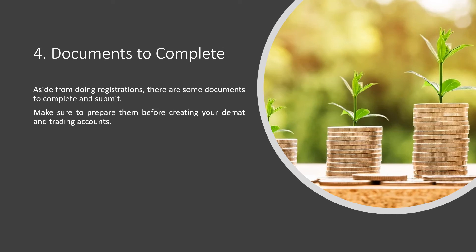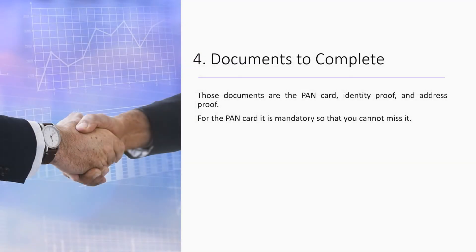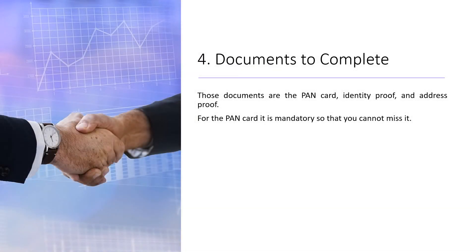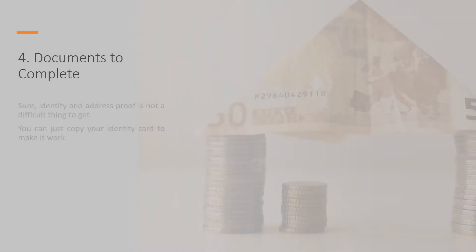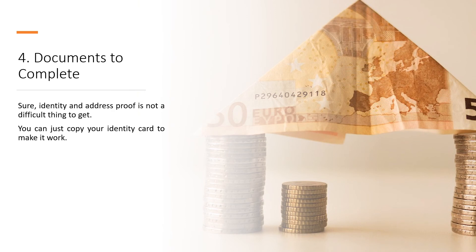Documents to Complete: Aside from doing registrations, there are some documents to complete and submit. Make sure to prepare them before creating your DMAT and trading accounts. Those documents are the PAN card, identity proof, and address proof. For the PAN card, it is mandatory so you cannot miss it. Meanwhile, for the other two, they are optional actually, but it is much better to have them and submit them for your own benefit. Identity and address proof is not a difficult thing to get — you can just copy your identity card to make it work.